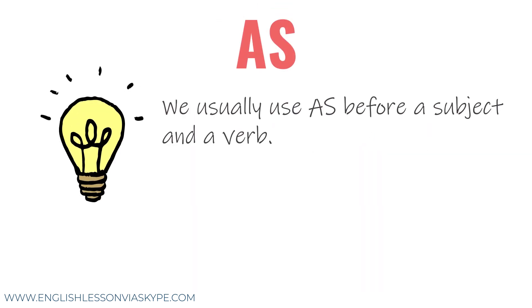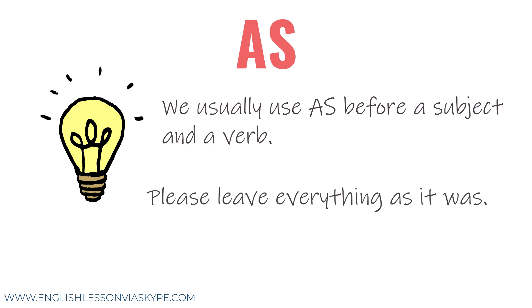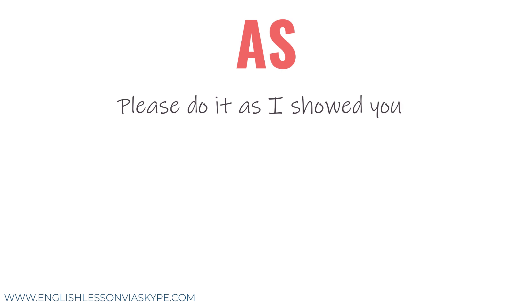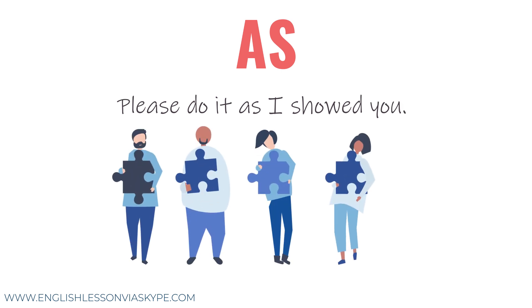When we use 'as', we usually use it before a subject and a verb — that's how you will recognize it. For example: please leave everything as it was — 'it' being the subject, 'was' being the verb. Please do it as I showed you — 'I' being the subject, 'showed' being the verb. So immediately you can recognize when to use 'as'.